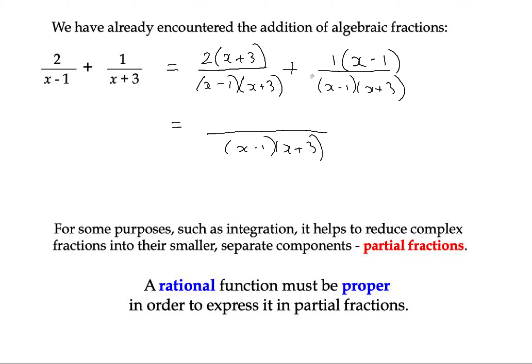So I'd have a line. And I've got x minus 1 times x plus 3. And up here on the numerator, the first numerator, I'm going to multiply it out. I've got 2x plus 6. And then I'm adding to that x minus 1. And I can simplify that numerator. I've got 3 lots of x. I've got positive 6 and negative 1 that becomes positive 5. And then over x minus 1 times x plus 3.